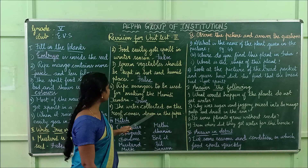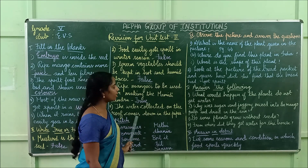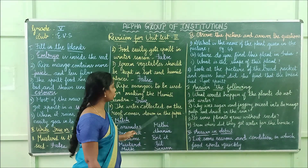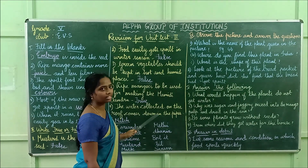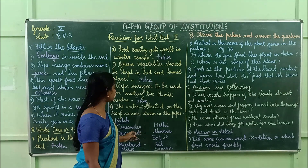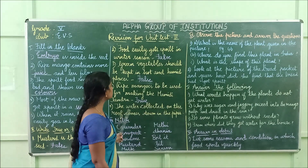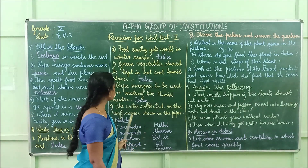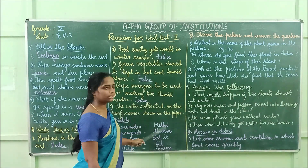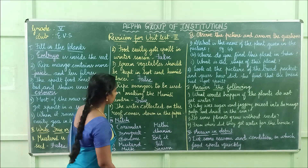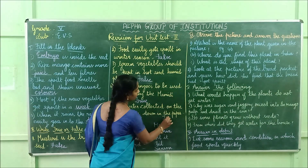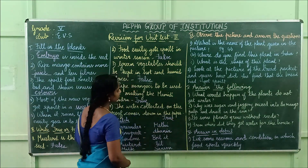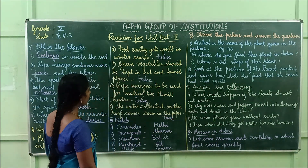Fifth one: the water collected on the roof comes down in the pipe. The answer is true.